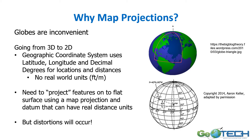Geographic coordinate systems using latitude and longitude and decimal degrees are very useful on a globe, but they don't really include real-world coordinates such as feet, meters, or miles. We need to project those features to a flat surface using a map projection and a datum so that we can have real-world distances, but unfortunately distortions will occur when going from 3D to 2D.